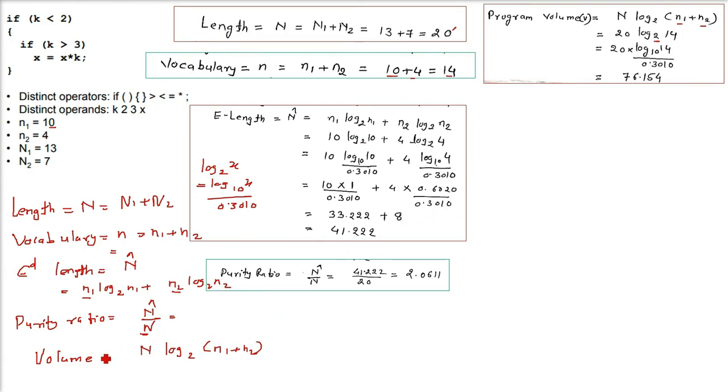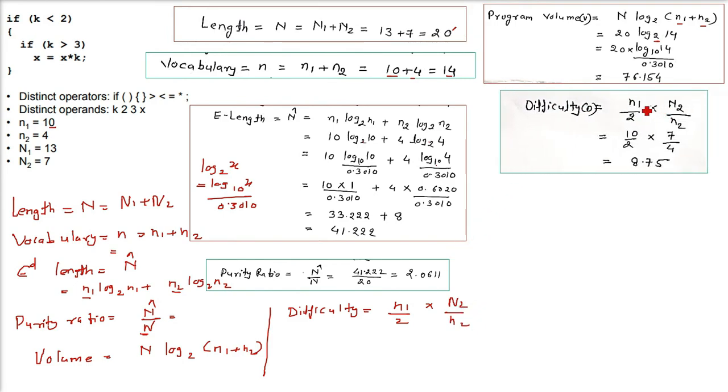Now for difficulty. Difficulty will be small n1 by 2 times capital N2 by small n2. n1 is 10, capital N2 is 7, small n2 is 4. So it will be 8.75.